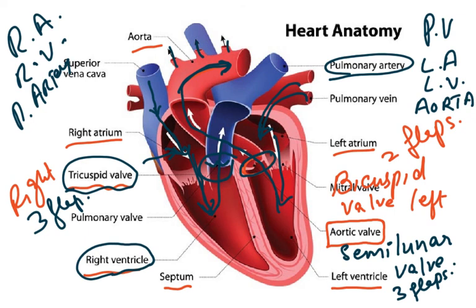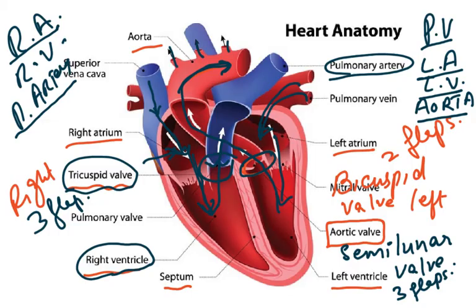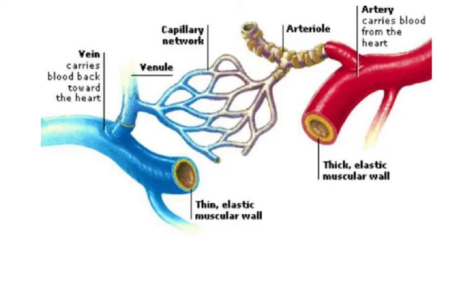Very quick recap: the superior and inferior vena cava bring deoxygenated blood to the right atrium. The right atrium pumps blood into the right ventricle, which goes into the pulmonary artery to the lungs. Blood returns from the lungs via the pulmonary vein to the left atrium, goes into the left ventricle, and the aorta pumps blood to the entire body through the major artery of the body.